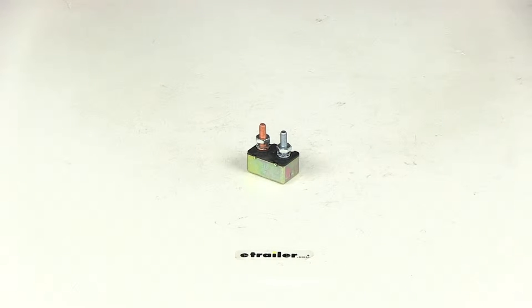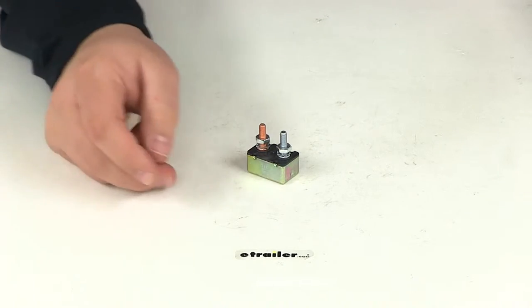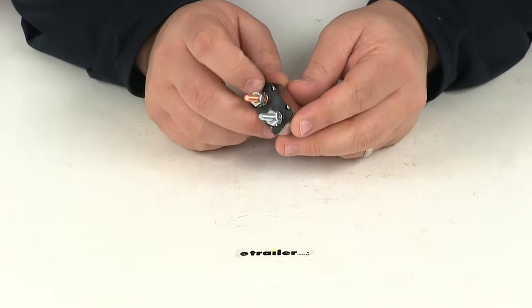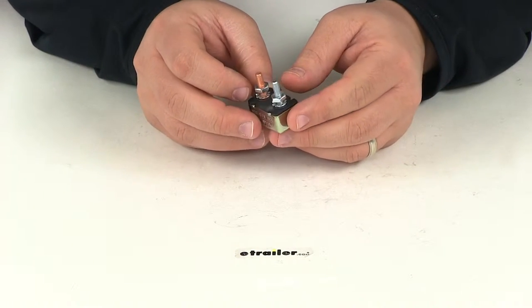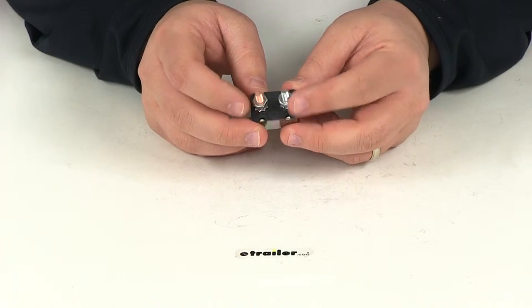Today we're going to be taking a look at part number PK54-130. This is the Pollock single pole 30 amp thermal circuit breaker. It's going to have a voltage rating of 12 VDC, which is voltage direct current.